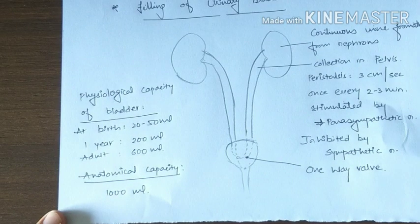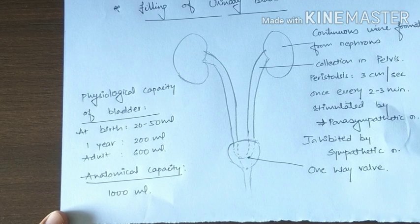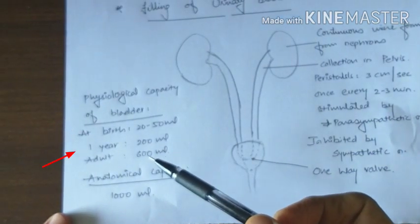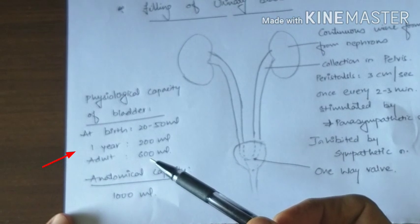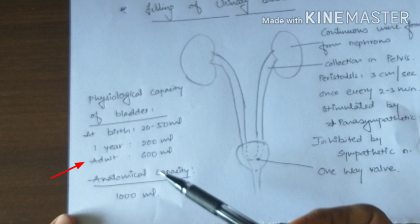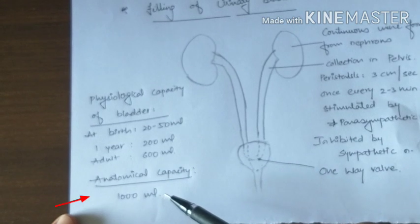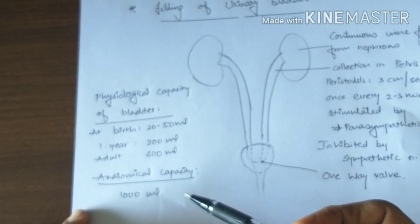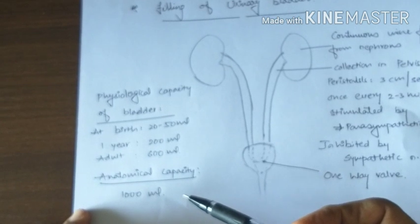Capacity of the urinary bladder: Physiological capacity at birth is 20 to 50 ml. At 1 year it becomes 200 ml and in adults it is 600 ml. Whereas anatomical capacity is 1000 ml, which is the capacity beyond which the bladder ruptures.